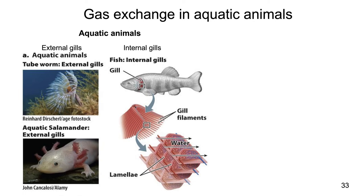In aquatic animals, you can have animals with external gills and animals with internal gills, but in either case they are using gills for gas exchange. Examples of animals with external gills include tube worms (an invertebrate) and salamanders (a vertebrate). In both cases you can see these feathery-looking gills, all about having a very high surface area to volume ratio for gas exchange.